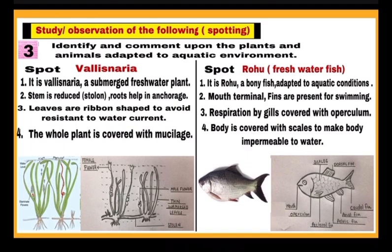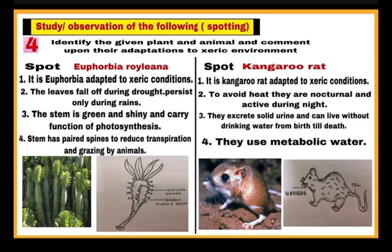Fourth category of spots are from plants and animals adapted to xeric conditions. These spots may be in the form of models or charts. First spot is Euphorbia, adapted to xeric conditions — this is point one. Point two: leaves fall during drought but remain during the rainy season. Point three: the stem is green and shiny and performs the function of photosynthesis. Point four: the stem has spines which reduce transpiration and also protect the plant from grazing animals. After this, draw the diagram and label the parts.